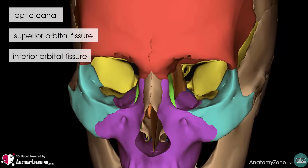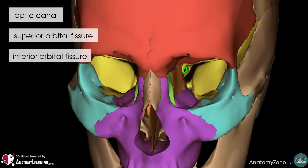The optic canal transmits the optic nerve and the ophthalmic artery, and opens into the middle cranial fossa. The superior orbital fissure lies laterally to the optic canal and transmits several nerves, including the lacrimal, the frontal, the fourth cranial nerve which is the trochlear, the superior and inferior branches of the oculomotor nerve which is cranial nerve 3, the nasociliary branches of the ophthalmic nerve which is the first branch of the trigeminal nerve cranial nerve 5, and it also transmits the abducens nerve, cranial nerve 6. In addition, it also carries the superior ophthalmic vein.